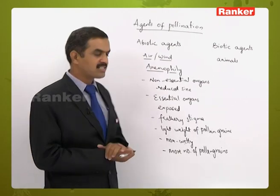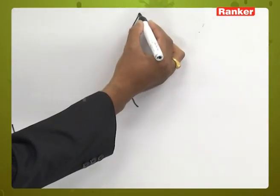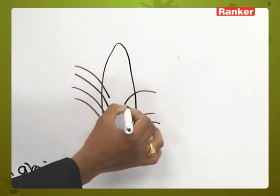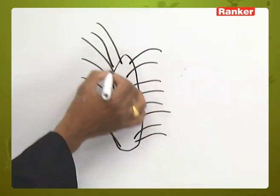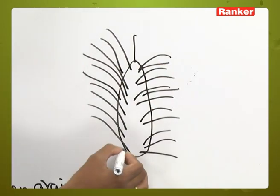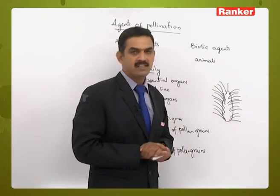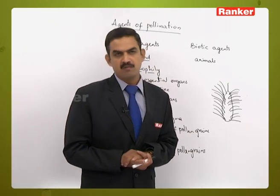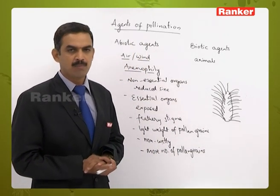An example is corn cob, where the stigmas are very large and the style is very long. The stigmas are exposed and feathery in nature, so when pollen grains move through the air, they easily stick to the feathery stigmas. This character observed in corn cob-like plants helps in anemophilous pollination.